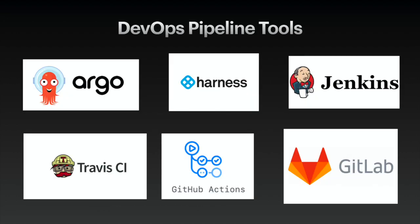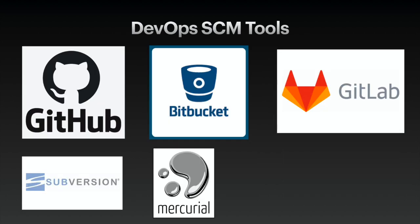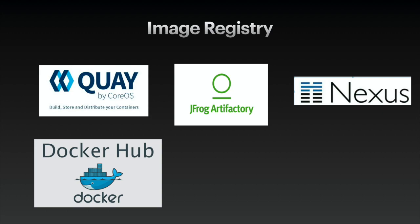Infrastructure DevOps Pipeline Technology Stacks. Let's explore some of the most commonly used technology stacks in the infrastructure DevOps pipeline. Here are a few examples of DevOps pipeline tools — note that these tools are usually equivalent for the application developer pipeline as well: Jenkins, Harness, Argo, GitLab, GitHub Actions, and so much more. You also have a number of choices for source control management tools: GitHub, BitBucket, GitLab, Subversion, Mercurial, etc. If you want to store operating system images or container images, you need some type of image registry: Quay, Artifactory, Nexus, Docker Hub.